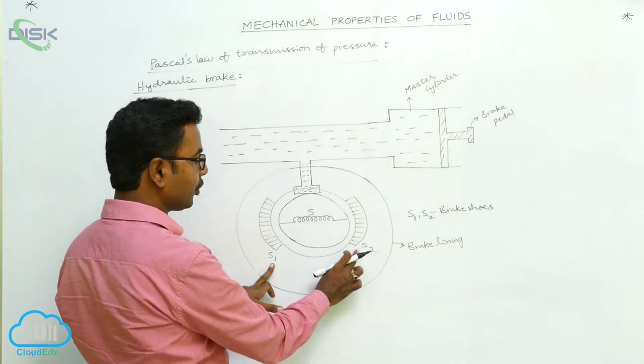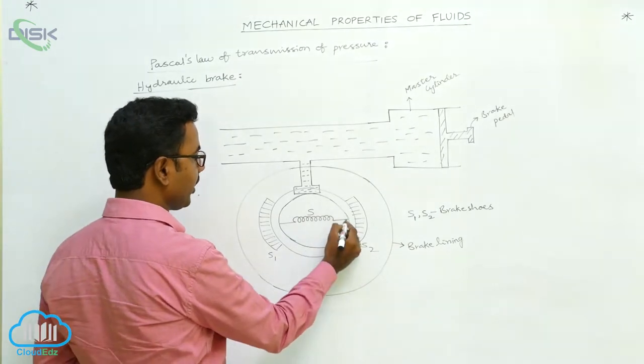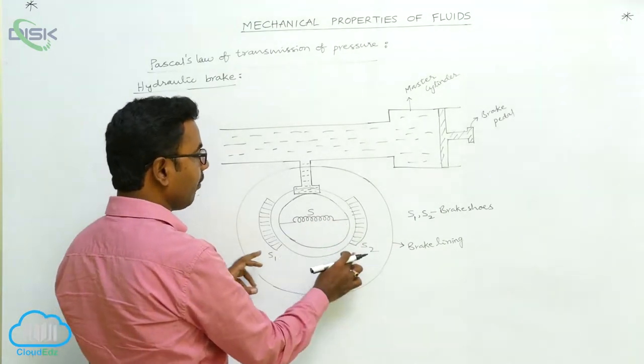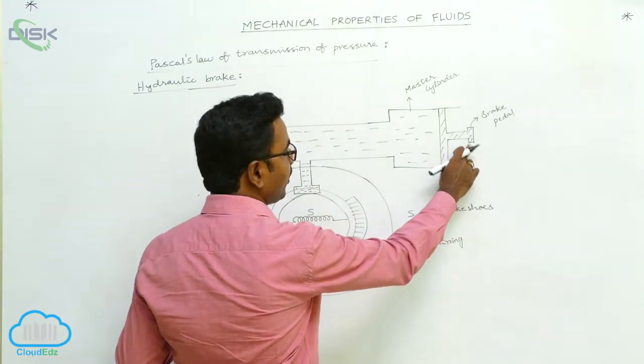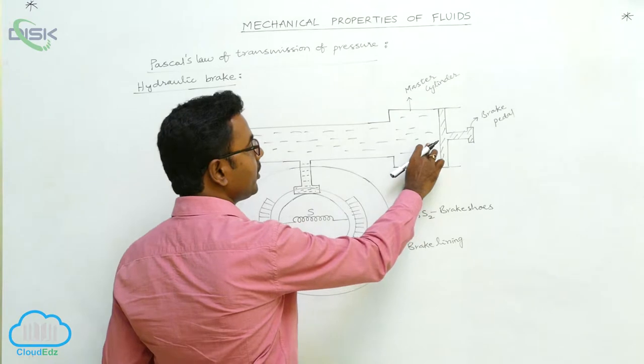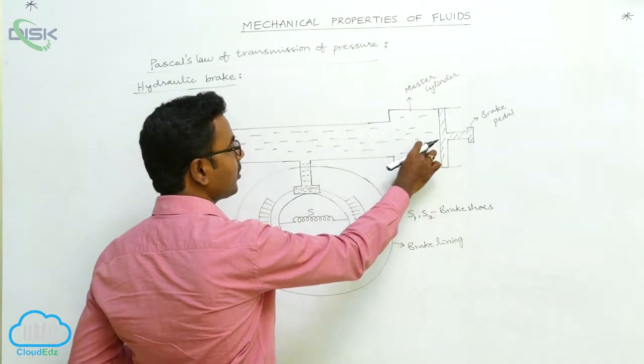S1 and S2 are the brake shoes which are connected with a spring S. Whenever you apply the brake, the brake pedal is pressed and pressure is exerted on the liquid in the master cylinder.